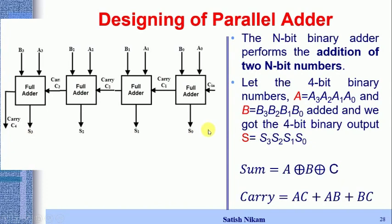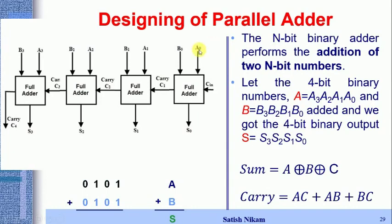We will consider one example to understand the functioning of this parallel adder. Take A = 0101 and B = 0101 (four-bit numbers). For the LSB full adder, a0 = 1 and b0 = 1. Since this is the LSB bit, the carry-in c0 = 0. We calculate sum = 1 XOR 1 XOR 0.